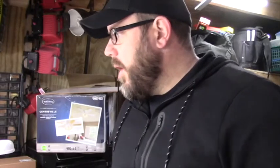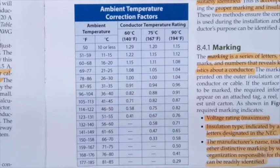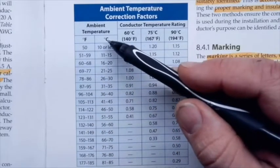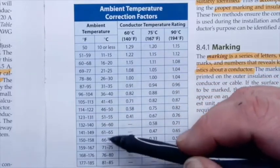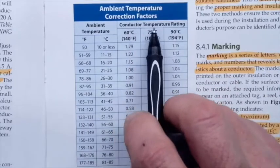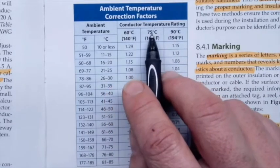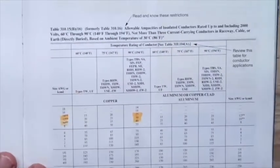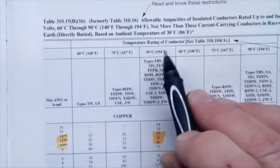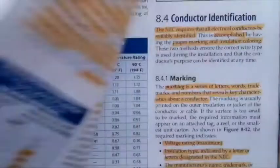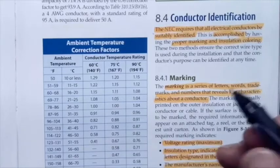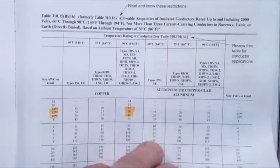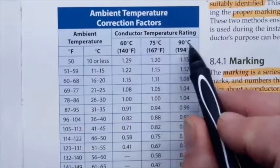If we go to our chart, it says ambient temperature correction factors. The first thing to notice is that we have Fahrenheit here — that's what we'll use most of the time — but sometimes a question may be in Celsius, so know where to find that. From there we have conductor temperature ratings: 60°C, 75°C, and 90°C. If we cross-reference back to the ampacity table, we see those same three columns. For example, THHN is in the 90-degree column, so when I need a temperature rating for THHN, I use the 90°C column.